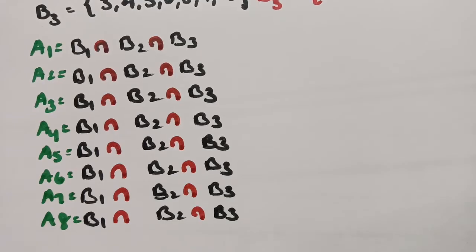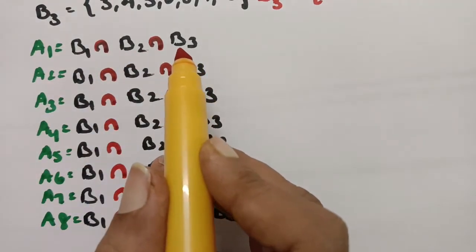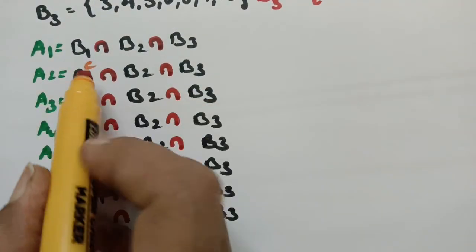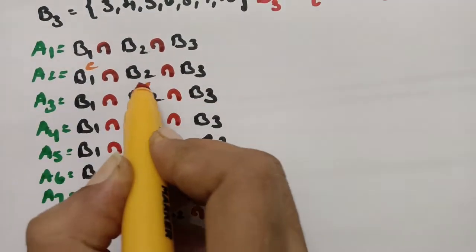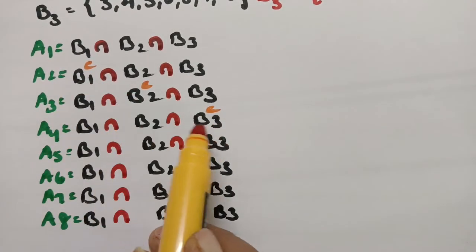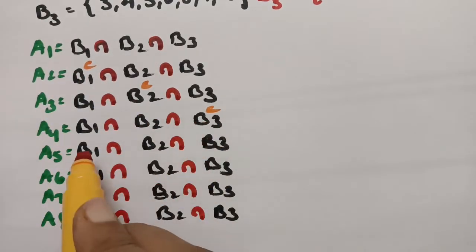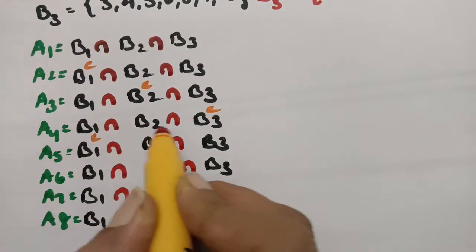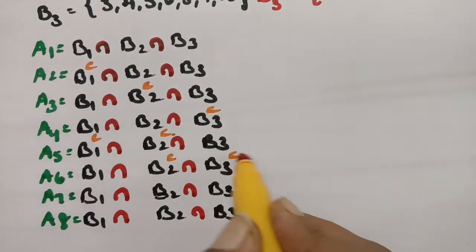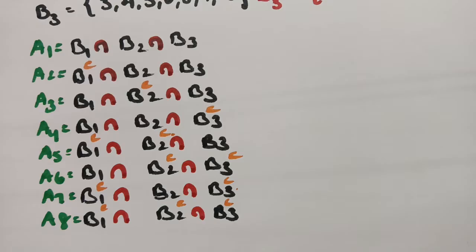The logic for filling the table is: first, leave B1, B2, B3 as they are (no complement). Then take single complements — B1 complement, B2 complement, B3 complement individually. Then take 2 at a time: complement of B1 and B2 together, B2 and B3 together, B3 and B1 together. Finally, take all 3 complements at once. This pattern makes it very easy to remember.